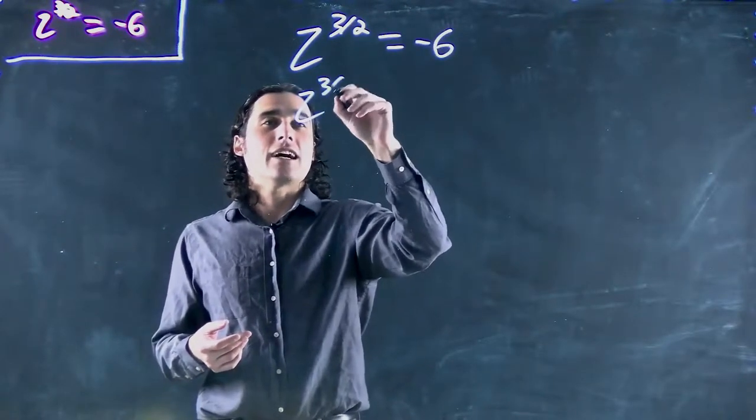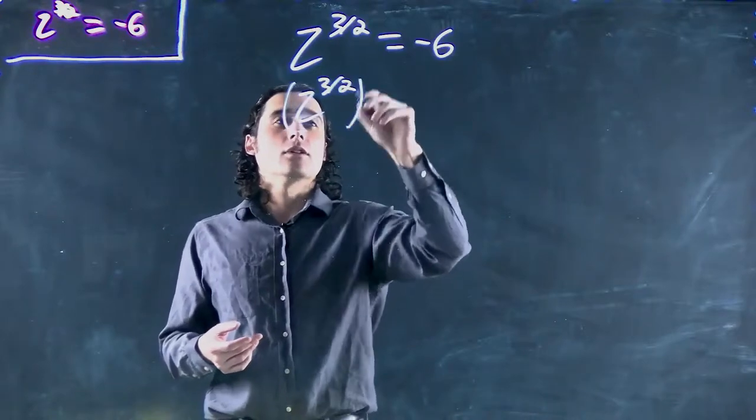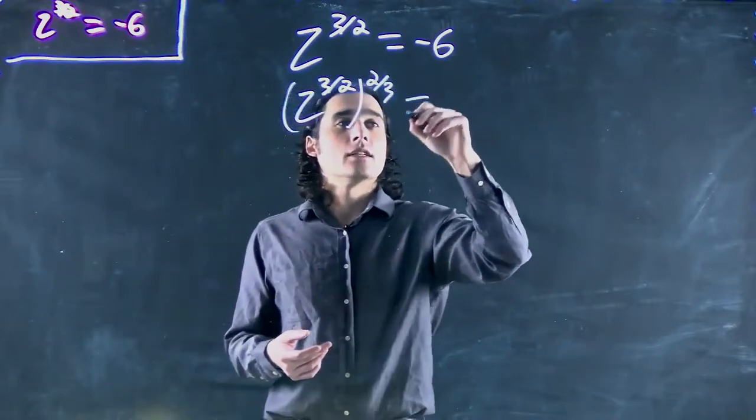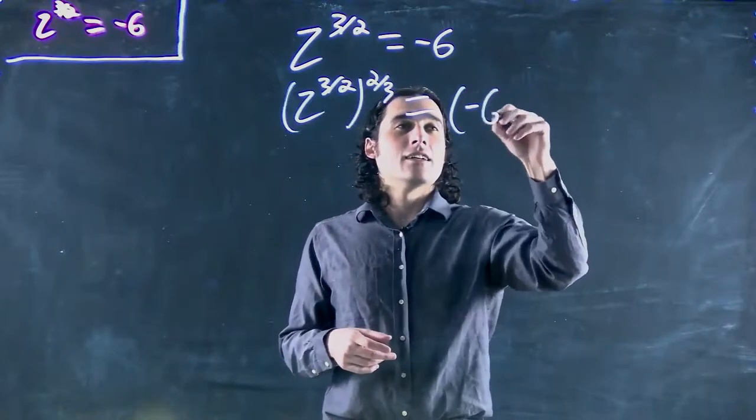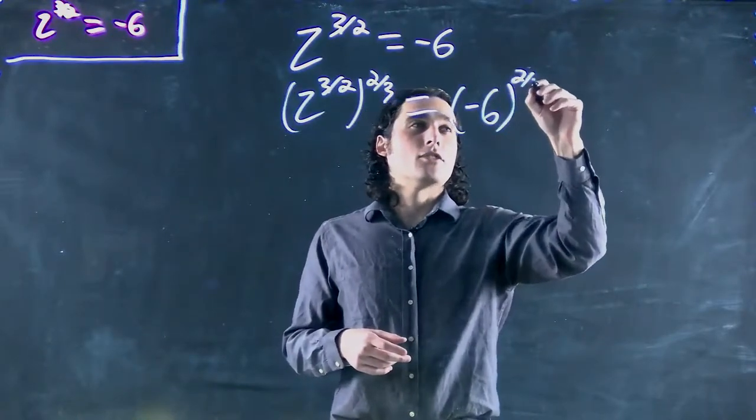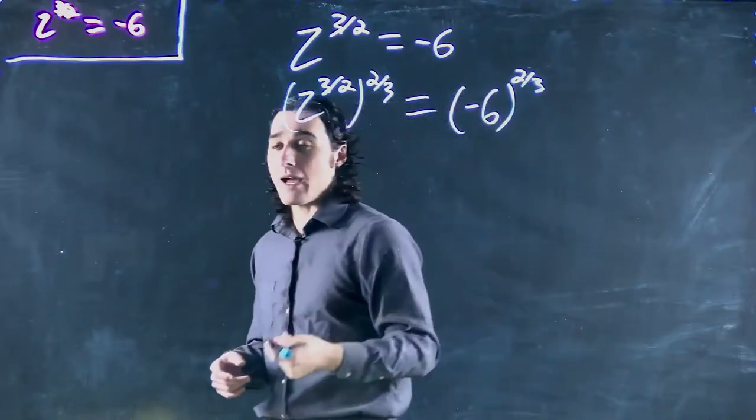So we put each side to the power of 2 over 3 and the z will just become z, but when we try and take the negative 6 and put it to the power of 2 thirds, our calculator is going to give us a math error.